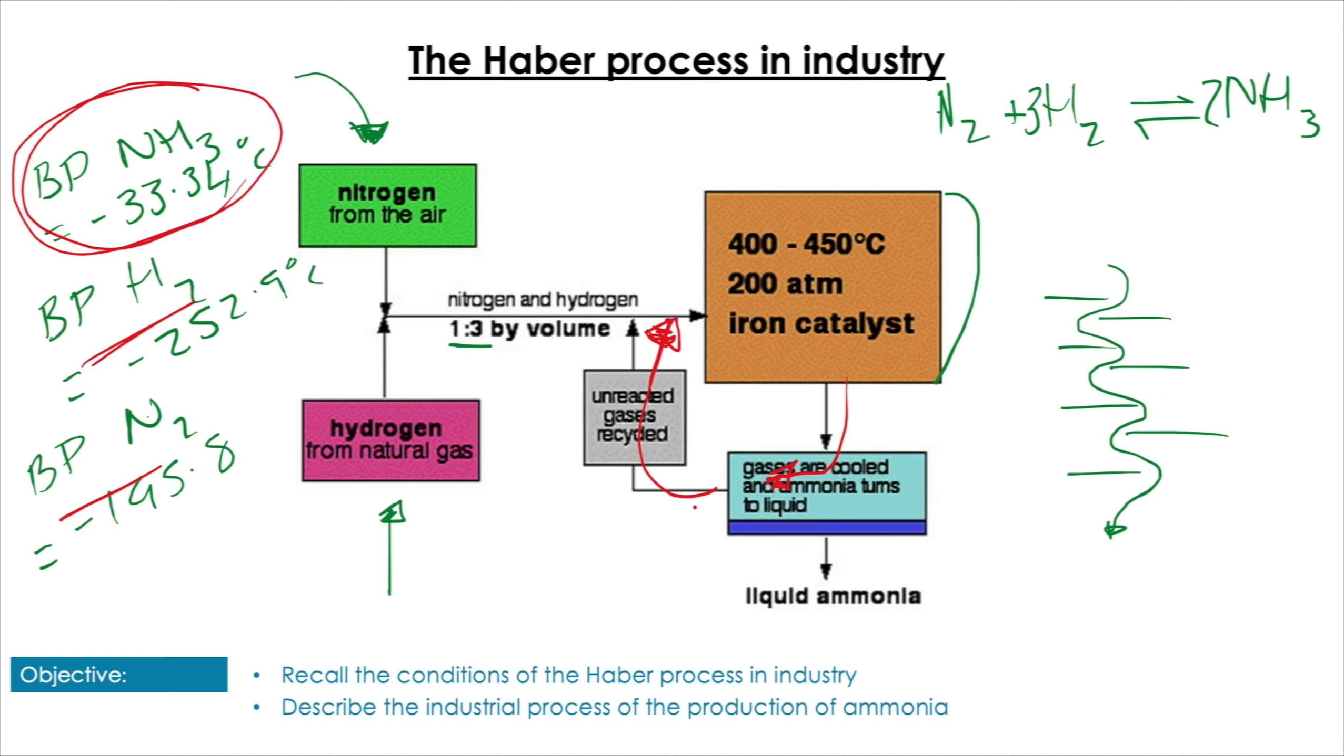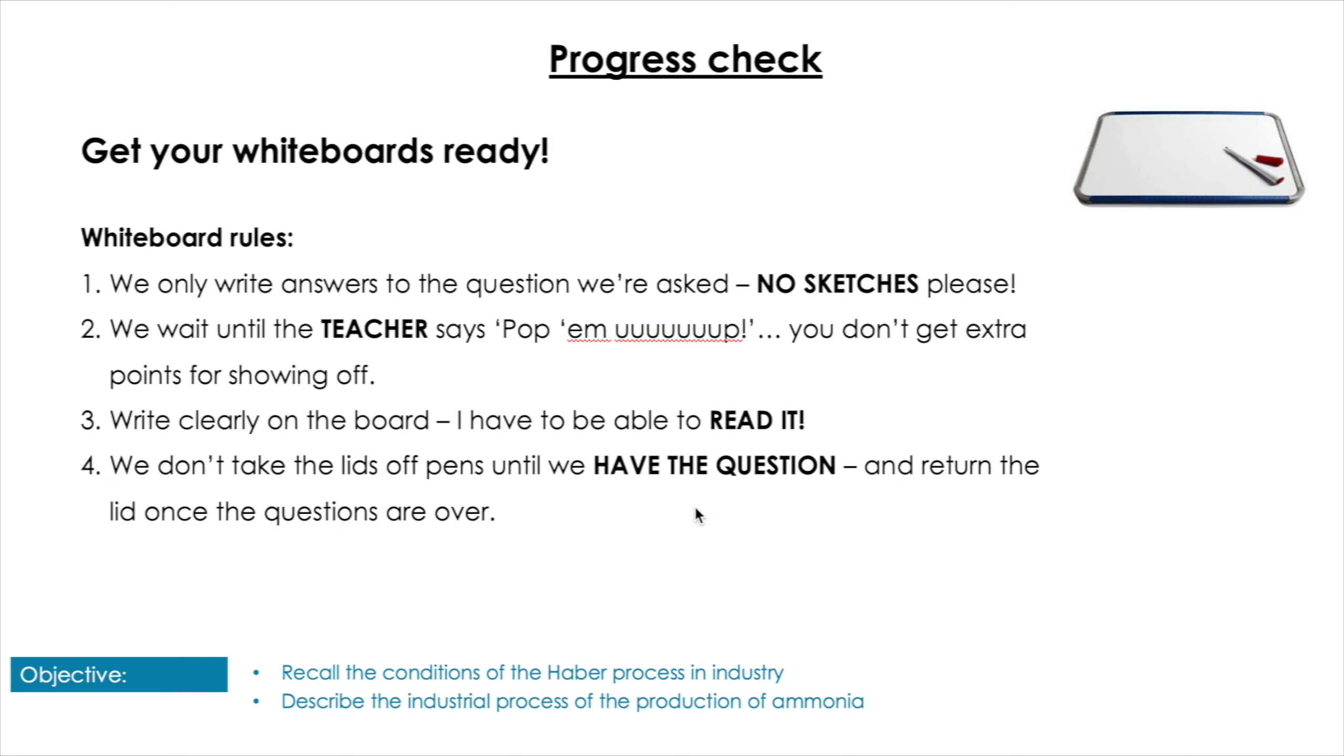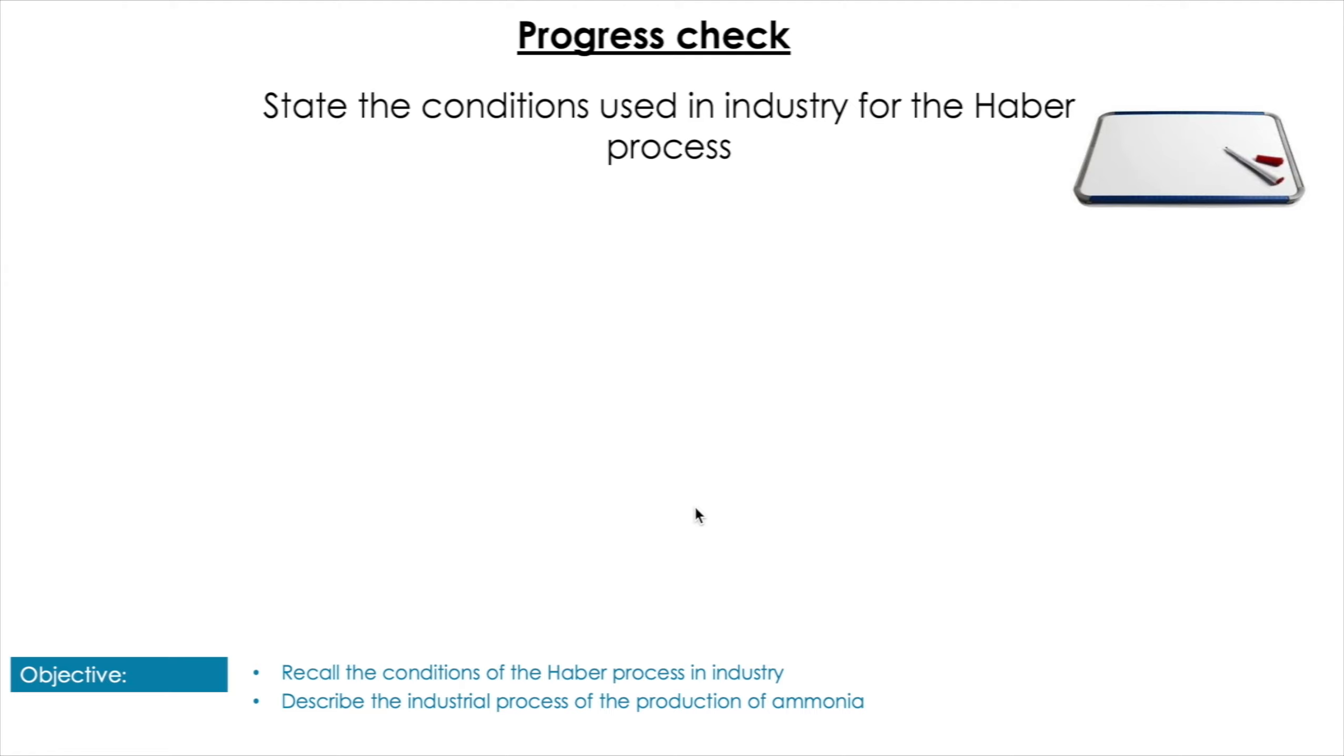This also has the other added effect of removing ammonia from the equilibrium. If we look at our equilibrium, as we remove the ammonia, the reaction will shift to replace that ammonia, further driving ammonia production. So tapping off and condensing the ammonia has multiple uses.